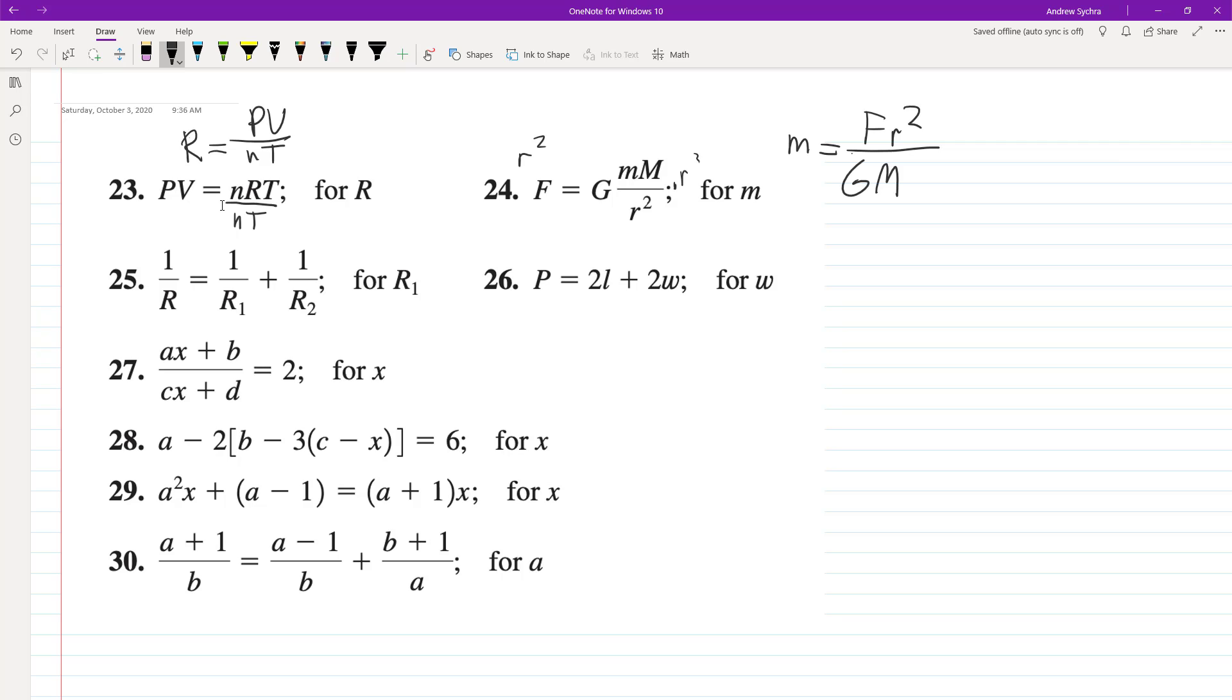All right. So resistance. So parallel circuits here, we want to solve for R1. We can do a common denominator. So our common denominator is going to be R, R1, R2. So what's going to happen here is we end up with R1R2, RR2, then RR1. And you have RR1R2 in the denominator of each of these. So that means you can drop them all.